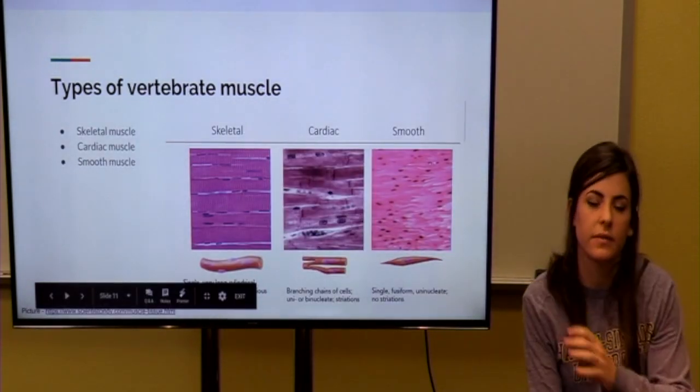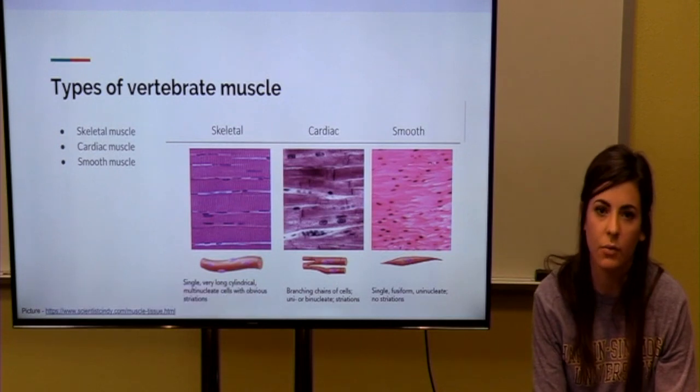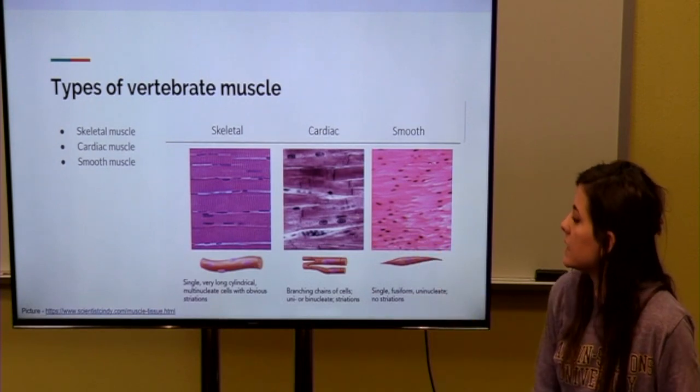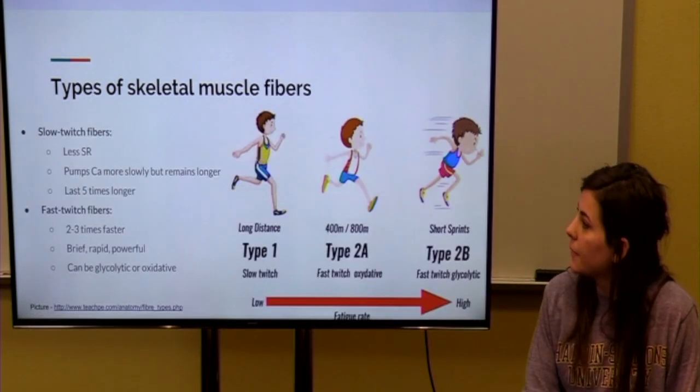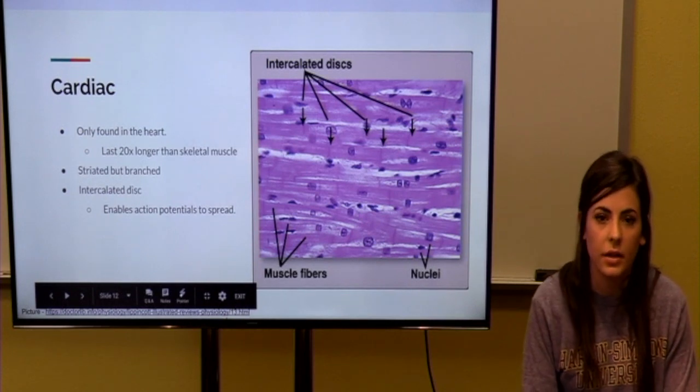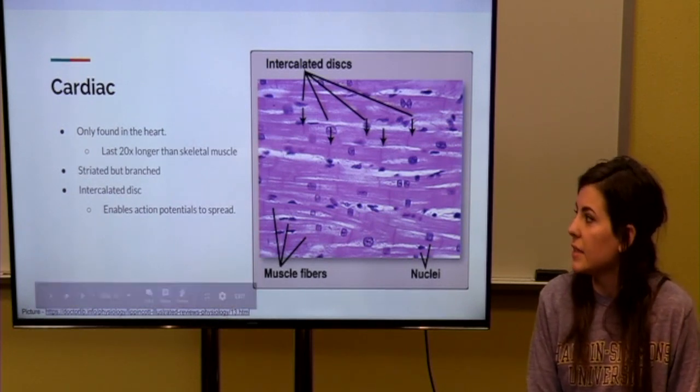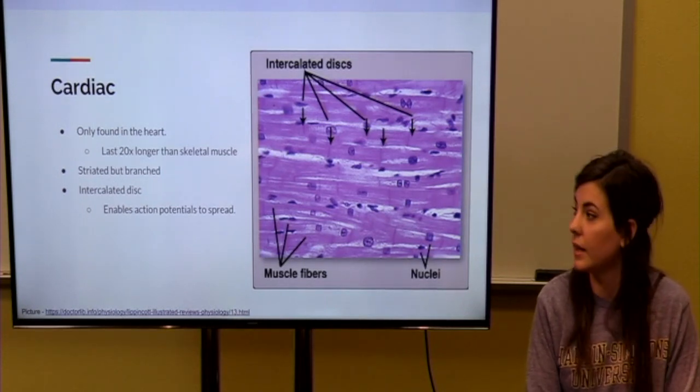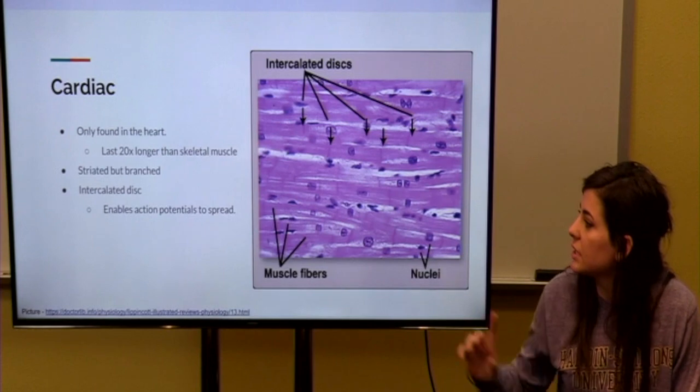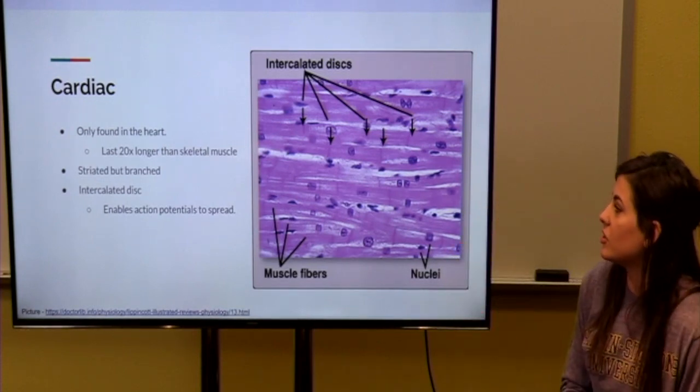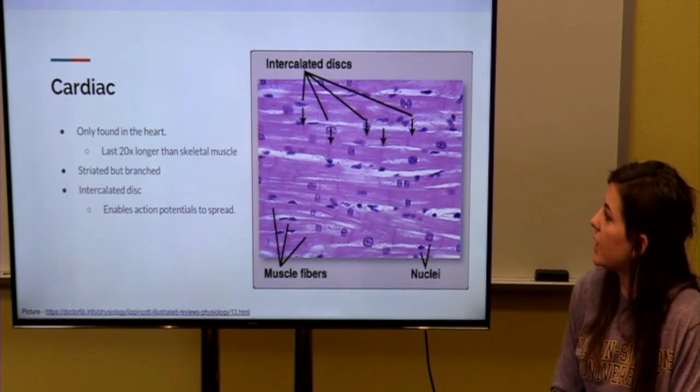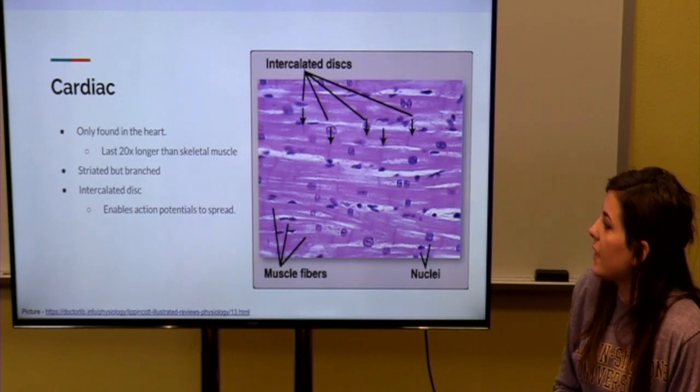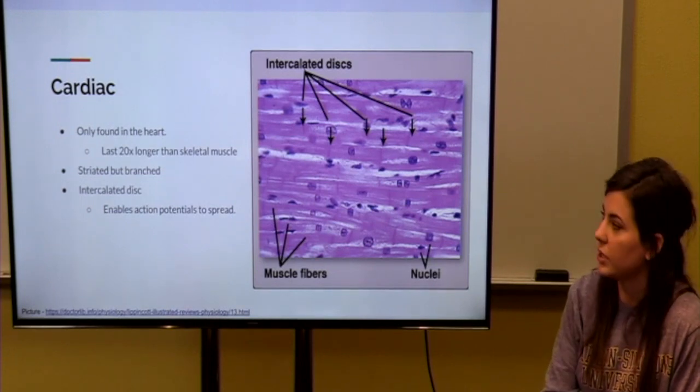Now, there are three different types of muscle in vertebrates, which is the skeletal muscle, which we just talked about, and cardiac and smooth muscle, which are presented right here. So, cardiac muscle is only found in our heart. And this muscle lasts 20 times longer than skeletal muscle, because it has to be continuously pumping our blood. As you can see here, it is somewhat striated like skeletal muscle, but the difference is that it is branched, and it is connected by intercalated discs, which you can see here. And this allows the action potentials to spread throughout the muscle more easily.